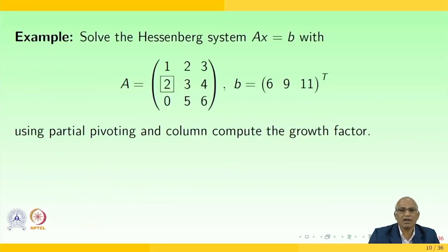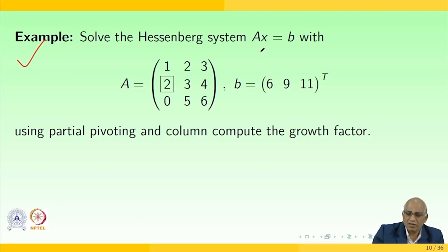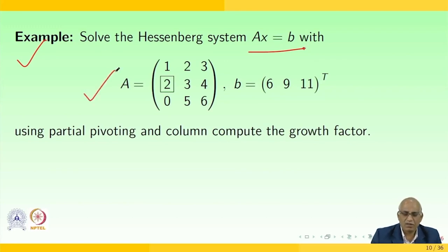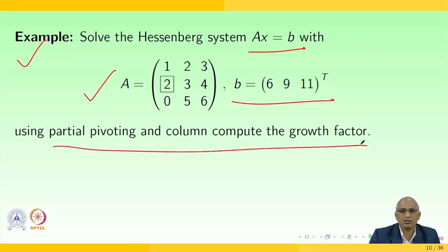Whatever we spoke till now, let us demonstrate through this example. Solve the Hessenberg system Ax equals B, with A being a 3×3 matrix with entries [1, 2, 3; 4, 2, 3; 4, 0, 5; 6] and B equals [6, 9, 11] transpose, using partial pivoting. Compute the growth factor — the growth factor will decide the stability of the system. The pivot on the first column is identified as the 2,1 entry since 1 is smaller than 2.